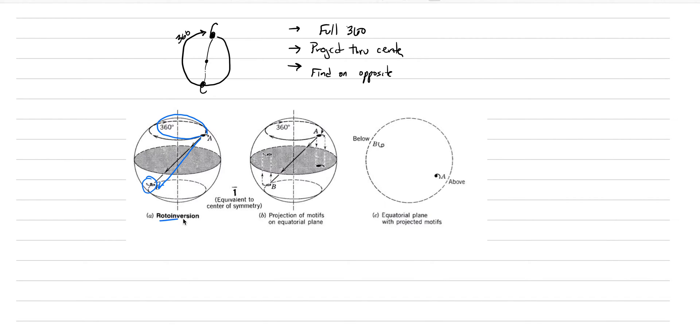The textbook here calls it a rotoinversion. That's totally fair. It is a rotoinversion, it's an inversion, and it's also called a center of symmetry. All of those are synonyms for one another. This drawing from the textbook is what I did here, where we're projecting in two dimensions what we can see in three.